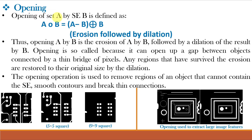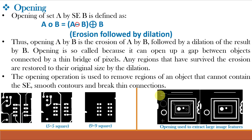Opening of set A by structuring element B is defined as A ∘ B = (A ⊖ B) ⊕ B — erosion followed by dilation. The opening operation removes regions of an object that cannot contain the structuring element (i.e., regions smaller than the structuring element), smooths boundaries, and breaks thin connections. For example, using a 5×5 square structuring element removes thin lines, while a 9×9 square structuring element removes even thicker lines, leaving only the larger objects. Thus opening is used to extract large image features, and we will implement this in MATLAB.